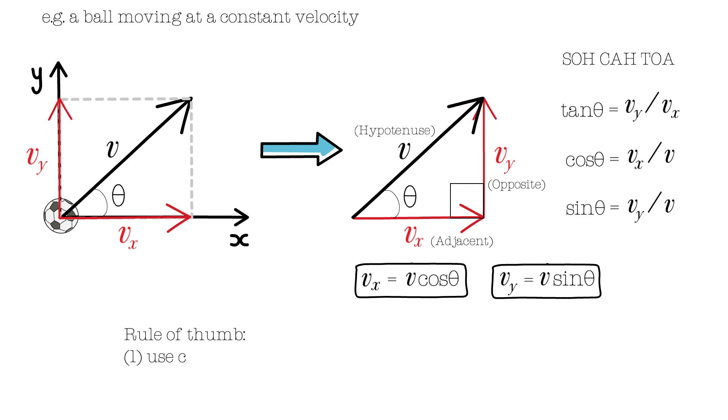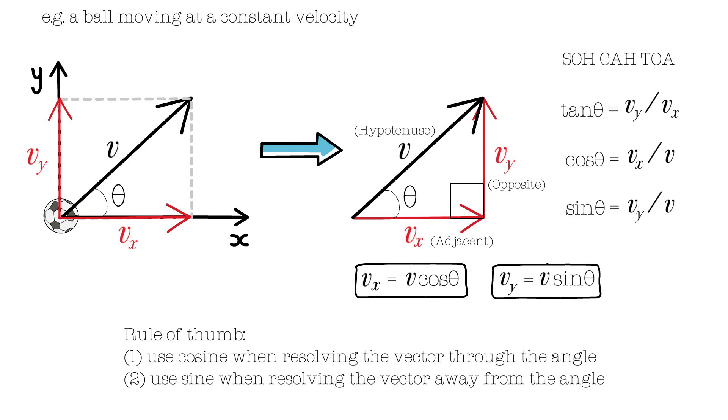Rule of thumb: use the COSINE expression when resolving the vector through the angle and use SINE when resolving the vector away from the angle.